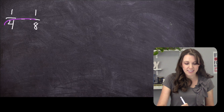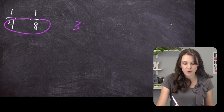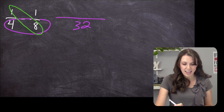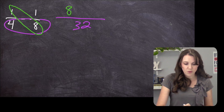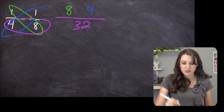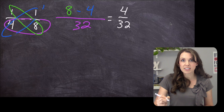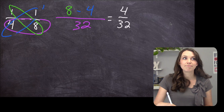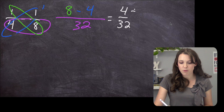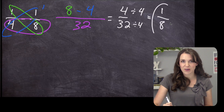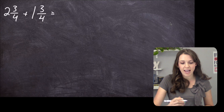Here's another subtraction one. The number on the bottom needs to be the same, so four times eight is 32. Now we do one times eight, which is 8, and one times four, which is 4. So 8 minus 4 equals 4 over 32. Is there a number that goes into the top and bottom? Yes, in this case it's 4. Divide both by 4 and we're left with 1 eighth as our answer.